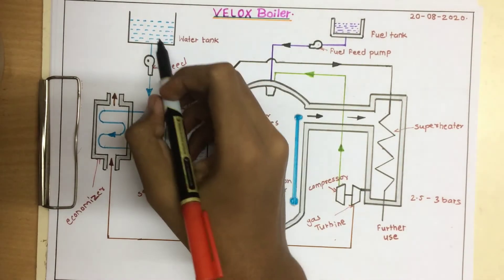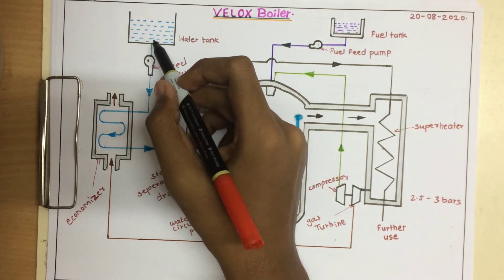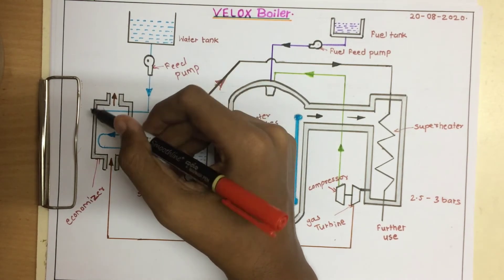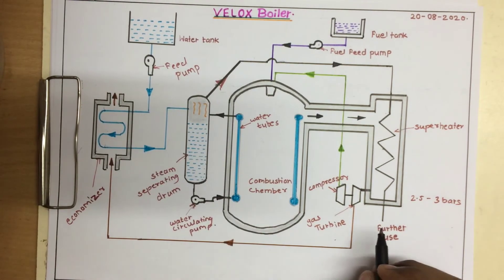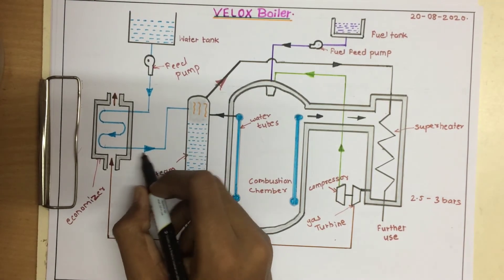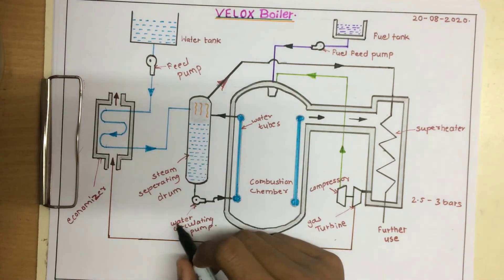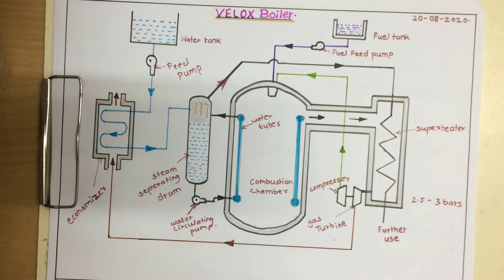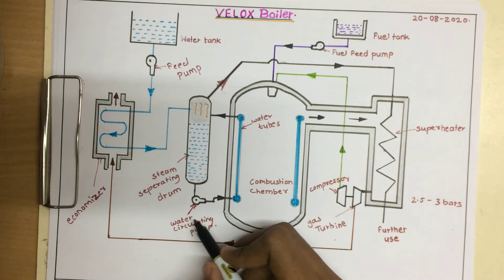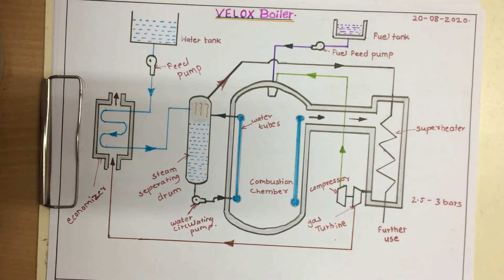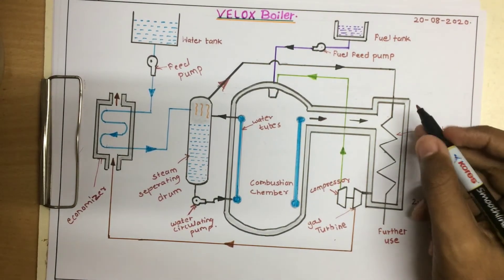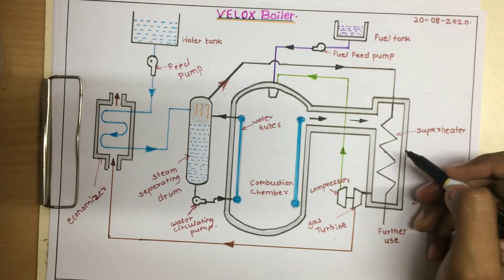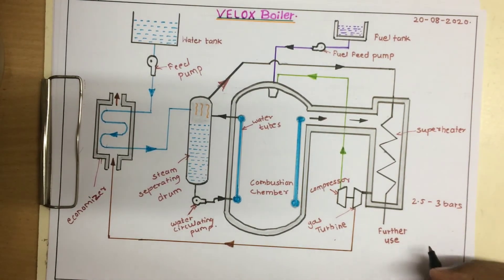Water from the water tank is drawn into the economizer, where it is heated by the flue gases. Then it is given to the steam separating drum, and after that it is circulated in the system with the help of a water circulating pump. The flue gases then go towards the superheater, hit the saturated steam, and convert it into superheated steam.